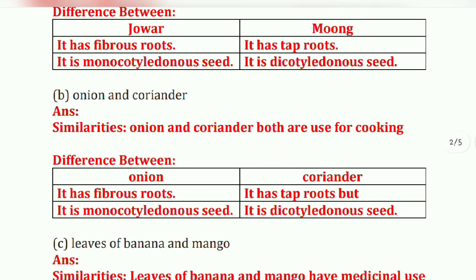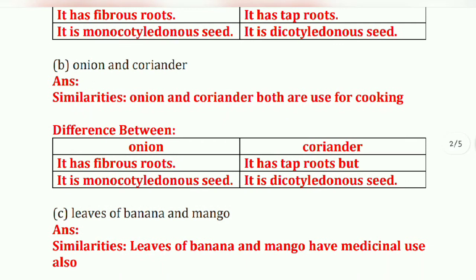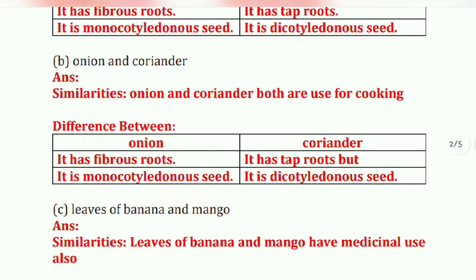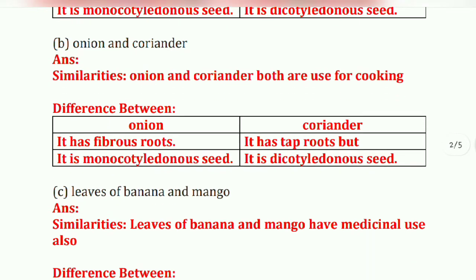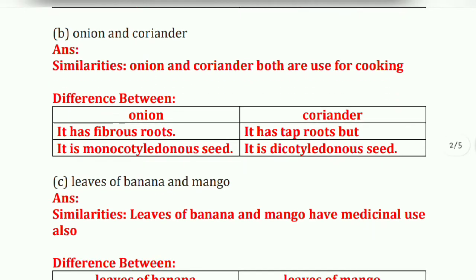Next: onion and coriander. Similarities: both onion and coriander are used for cooking. Differences: onion has a fibrous root while coriander has a tap root. Onion is a monocotyledonous seed and coriander is a dicotyledonous seed.